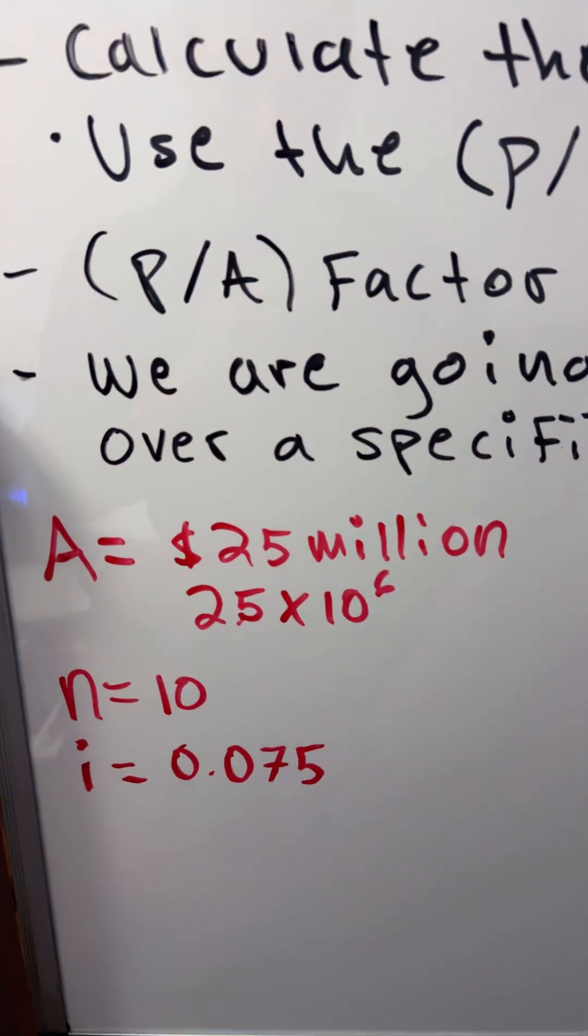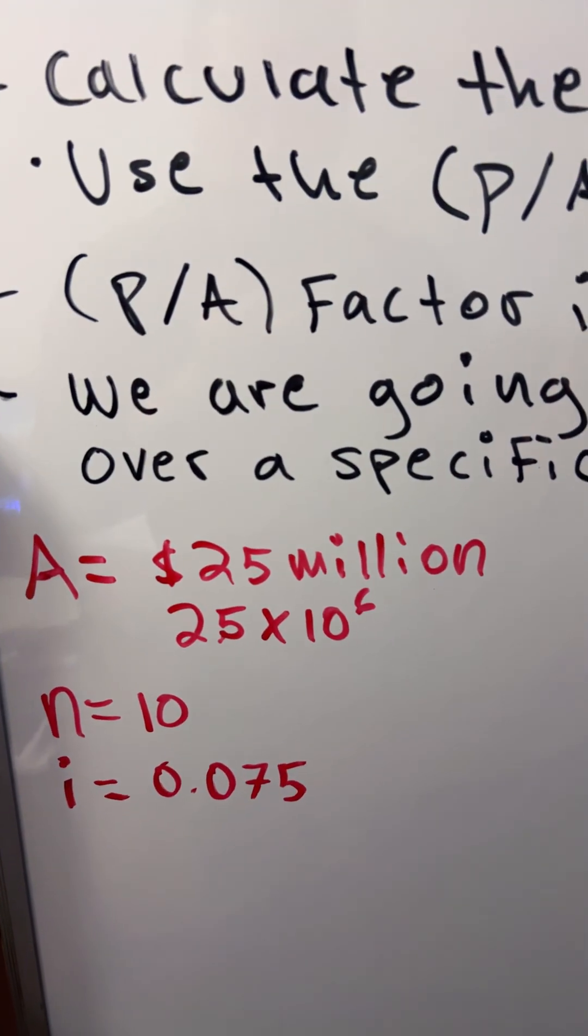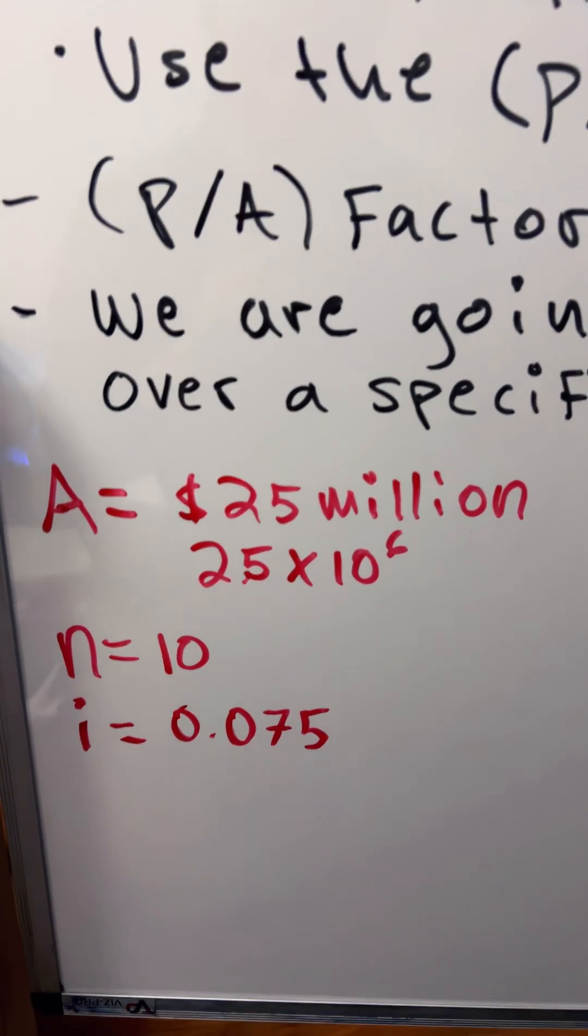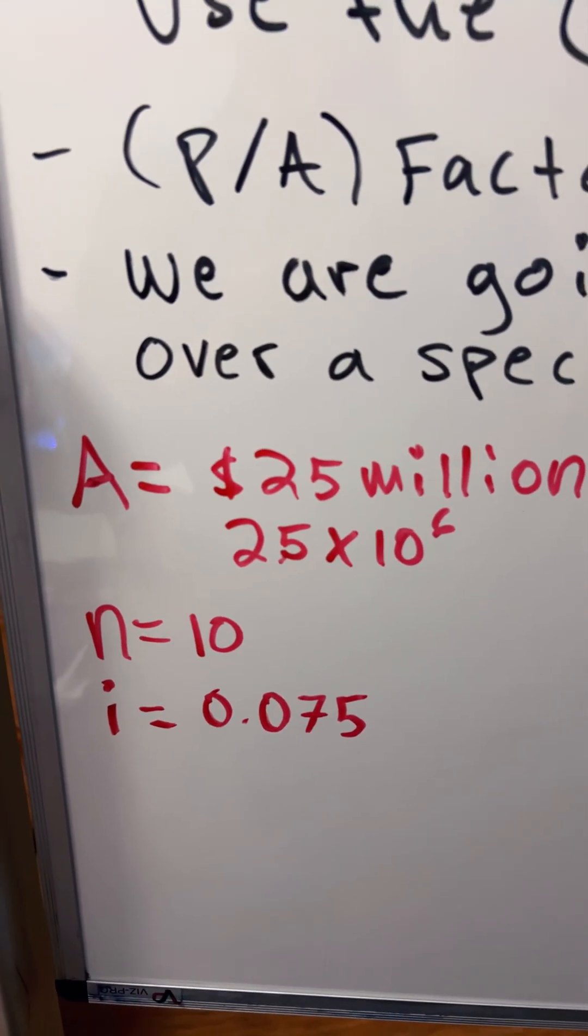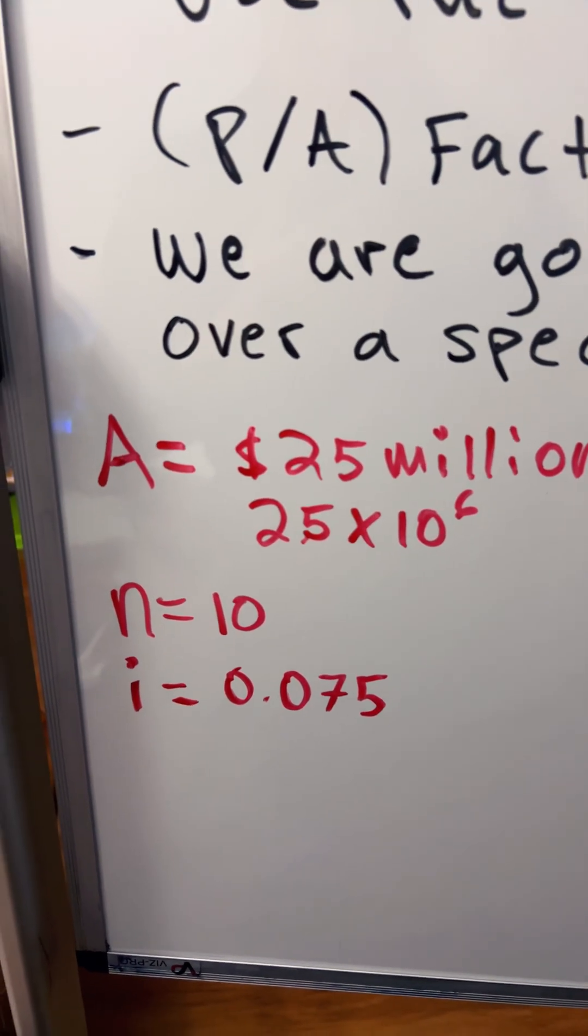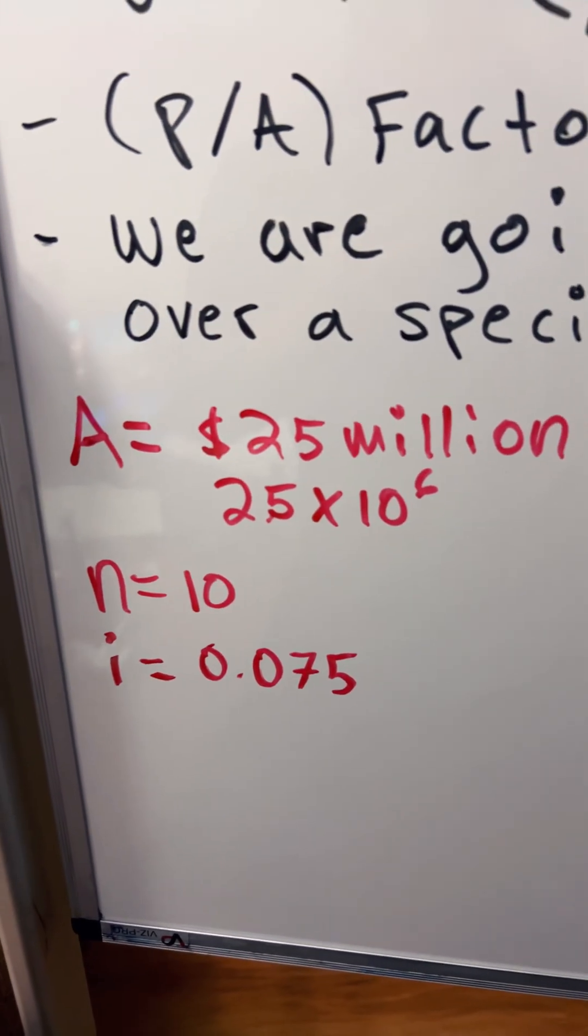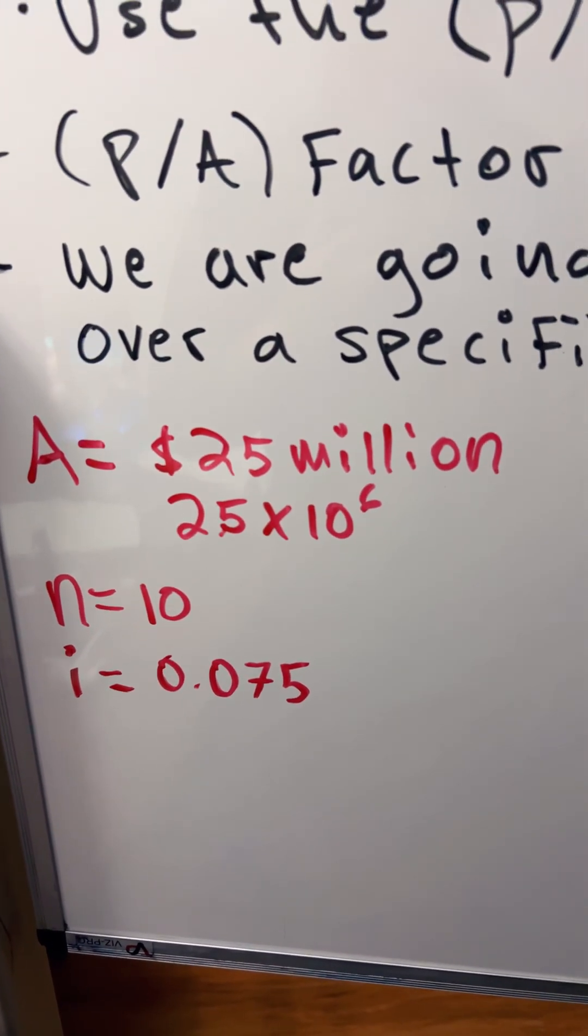A equals $25 million or 25 times 10 to the 6, and the number of periods equals 10, which is 10 years. i is 7.5% or 0.075.